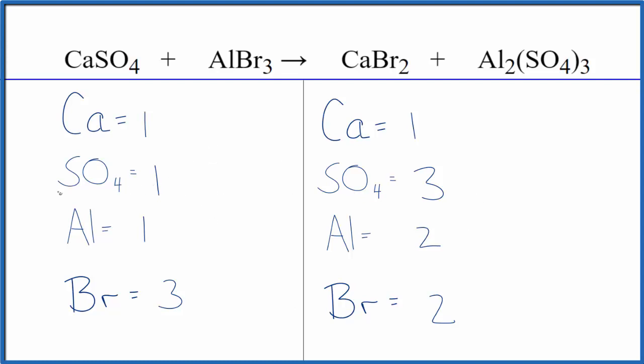Why don't we balance the sulfates? Because we could just put a three in front of the calcium sulfate. One times three, that gives us three calciums, but we have our sulfate here, one times three. Now we have the sulfates balanced.